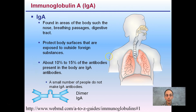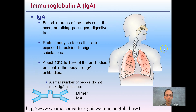Starting with IgA: they're found in areas of the body such as the nose, breathing passages, and digestive tract. It's important that these antibodies are located in these regions because they protect body surfaces that are exposed to outside foreign substances — that is their specialty. About 10 to 15% of the antibodies in the body are IgAs. A small number of people do not produce IgA antibodies, which is a rarity. You don't need them to live, but having them better protects surfaces in direct exposure to the outside environment.